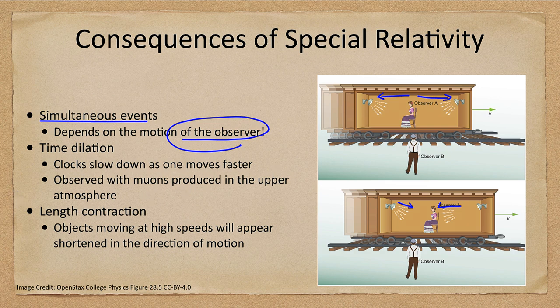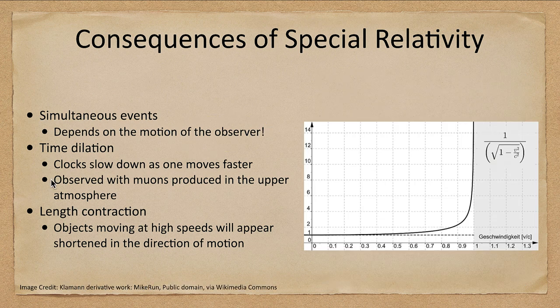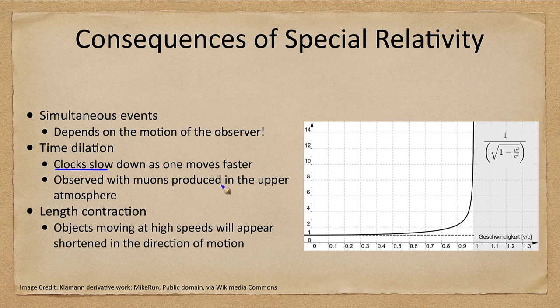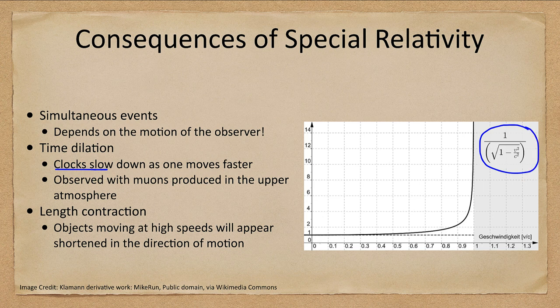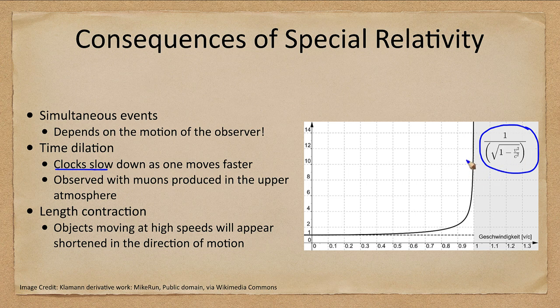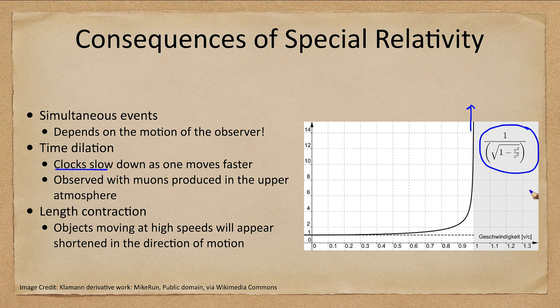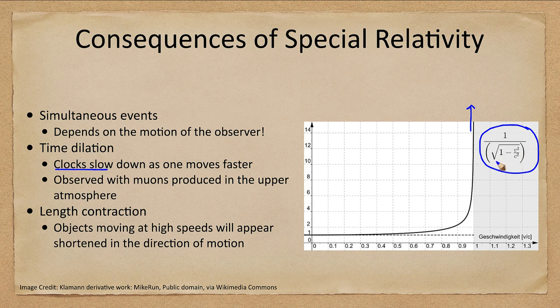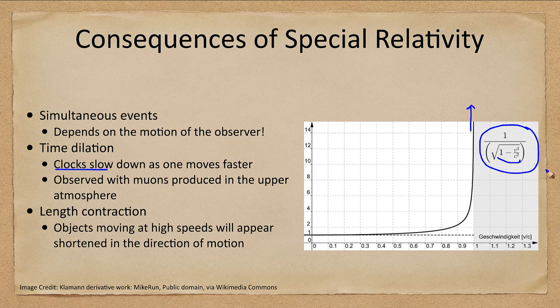We also have time dilation. We mentioned this before with general relativity, but clocks slow down as one moves faster. The conversion factor shows how this depends on your speed. As you get closer to the speed of light, this factor gets bigger and bigger very fast. You can never exceed the speed of light, because if you did, the term under the square root would be negative, giving an imaginary result with no physical solution.